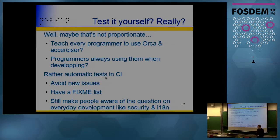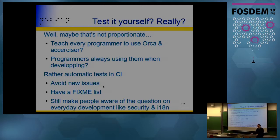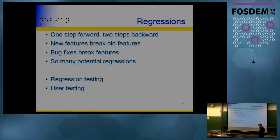Rather than requiring everyone to become accessibility experts, we propose using automatic tests in continuous integration as a first step. The goal is to prevent new classes of issues while maintaining a fix-me list for existing ones. This raises awareness: can it fix issues? Yes — and then maybe later we can expand the scope of what developers are expected to keep in mind.